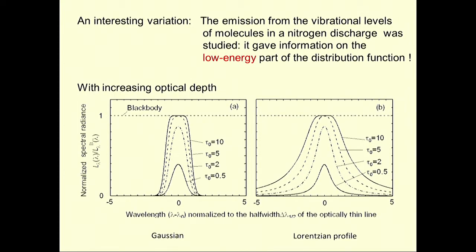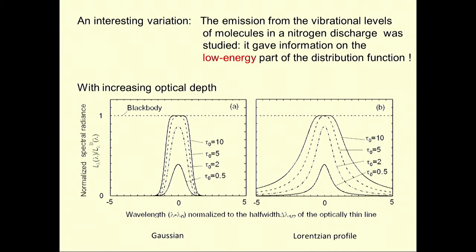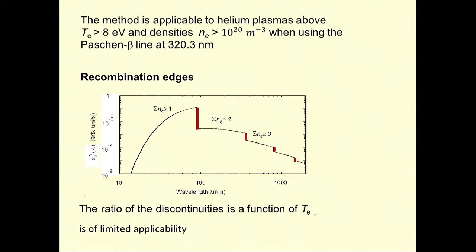If you have optically thick lines, the line core grows toward the blackbody radiation. For a Gaussian Doppler profile, you see it gets very flat at the top. On the right side with a Lorentzian, when it gets optically thick it develops a broad tail. For inhomogeneous plasmas, you get lines with a central self-reversal dip.